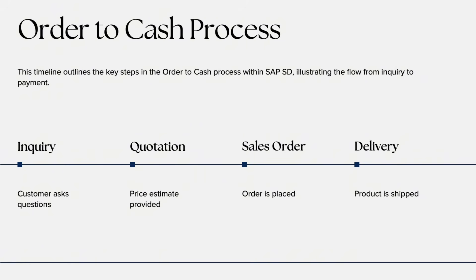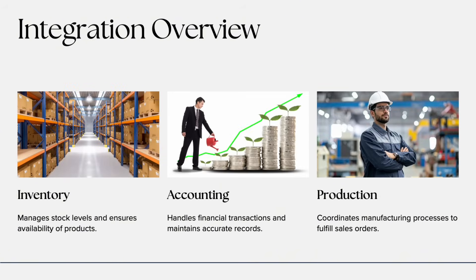Step six is Payment Processing. Finally, when the customer pays, the incoming payment is posted in FI using transaction F-28, closing the entire cycle. In summary, the order-to-cash flow is: Inquiry → Sales Order → Delivery → Billing → Payment. That's how SAP SD ensures a seamless process from order creation to financial completion.